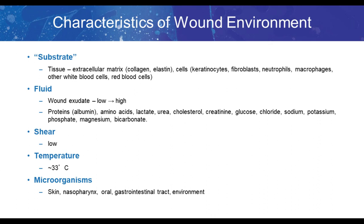One of the first things to consider when thinking about models for the wound environment is what are the characteristics of that environment. First, there's the substrate on which the biofilm grows — tissue composed of the extracellular matrix, as well as various epidermal, dermal, and white blood cells. There's also the wound exudate, which can vary a lot between subjects and wounds — from relatively dry with low exudate to highly exudative wounds. The exudate contains a lot of proteins, mostly albumin, as well as amino acids and other components that are great substrates for promoting bacterial growth.